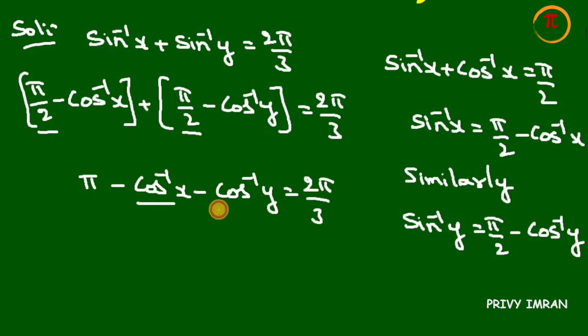Now this cos inverse of x and cos inverse of y send it to the right hand side and 2π/3 bring it to the left hand side. Then π minus 2π/3 is equal to cos inverse of x plus cos inverse of y.